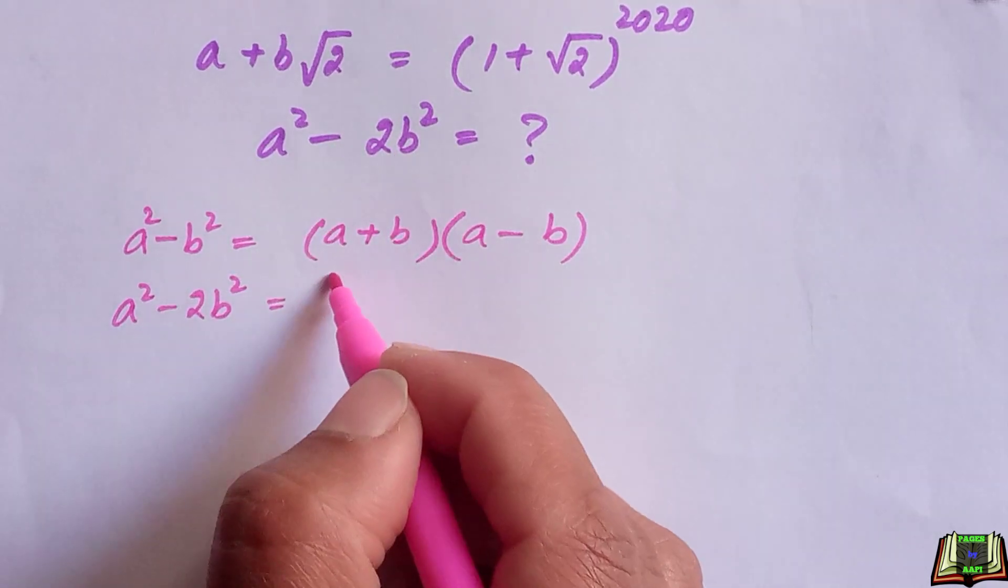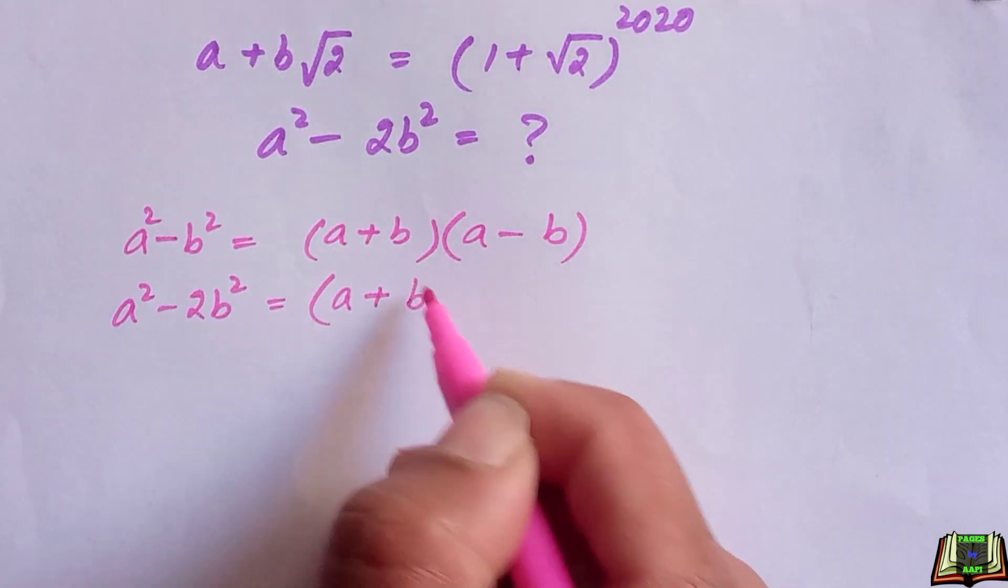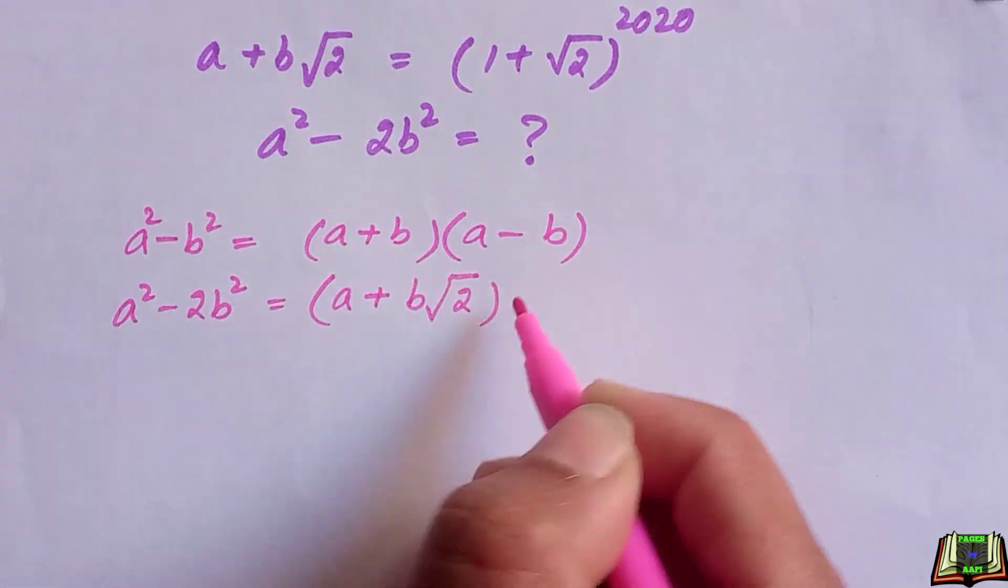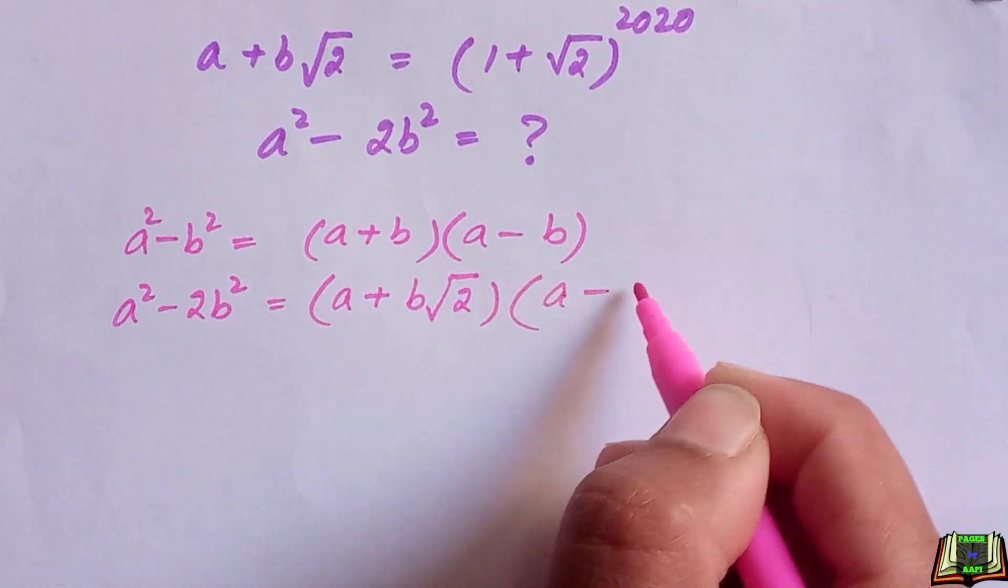Where a is a and b is b√2, so we have a + b√2 times a - b√2.